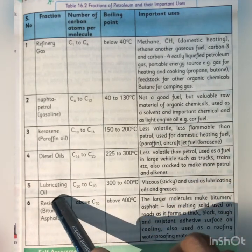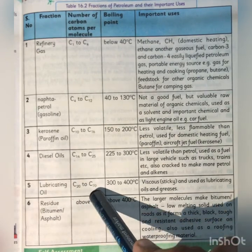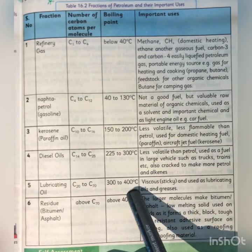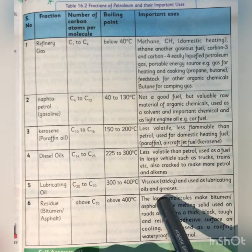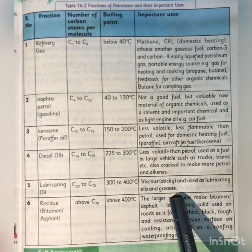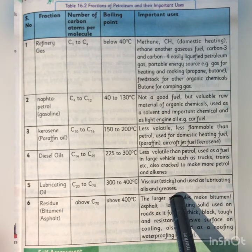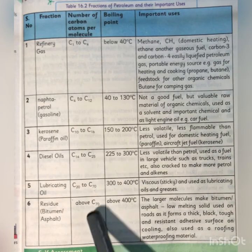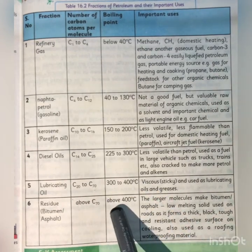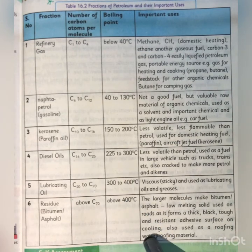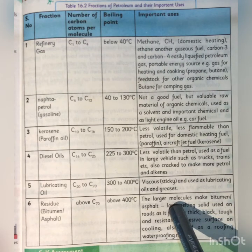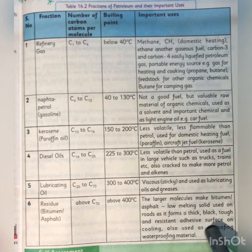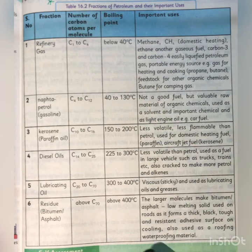Fuel oil has a temperature range of 300 to 400 degrees Celsius. It is a viscous liquid used as lubricating oil and grease to reduce friction between parts. The residue fraction — hydrocarbons above C37 at temperatures above 400 degrees Celsius — consists of large solid molecules forming asphalt, a low-melting solid used on roads as a thick, black, tough, adhesive surface, and also used as roofing and waterproofing material.